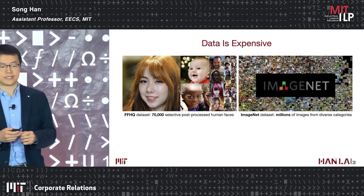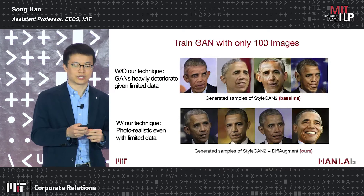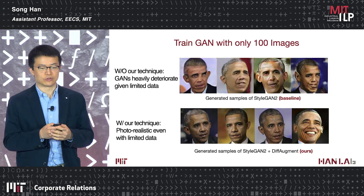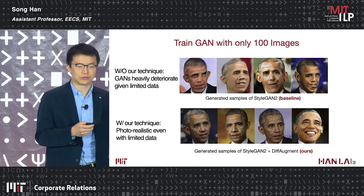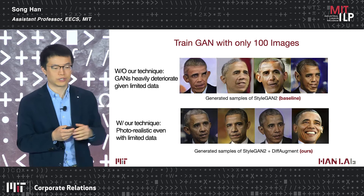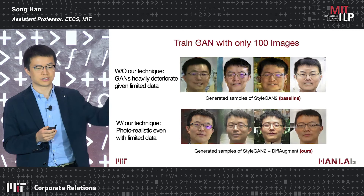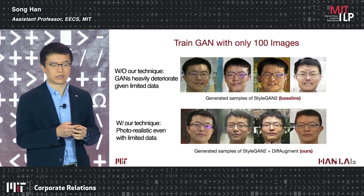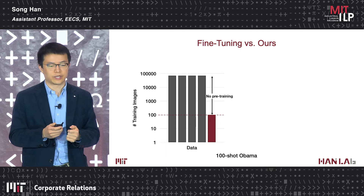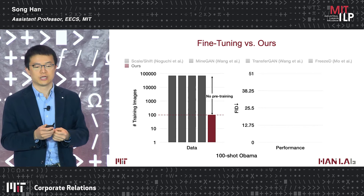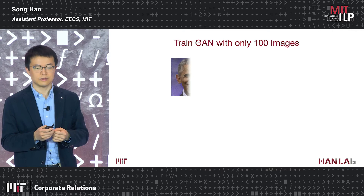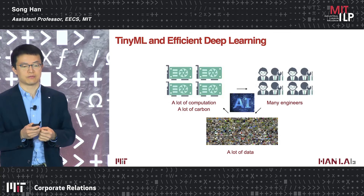Beyond computation, data collection and labeling is also very expensive — taking months or years. We work on reducing data required for training GAN models. Previously, training with only 100 images produced very poor quality. Using our technique called differentiable augmentation, we can generate photorealistic images with only 100 images, reducing training data from 70,000 images to 100 while maintaining neck-and-neck performance with the baseline.